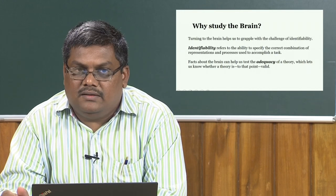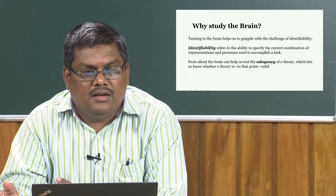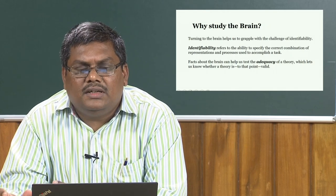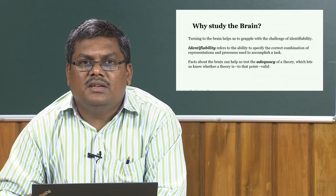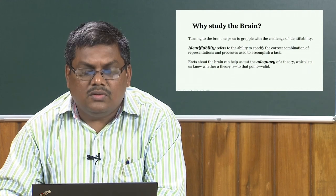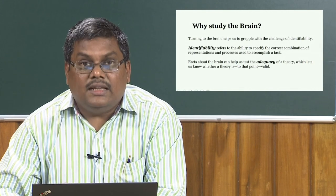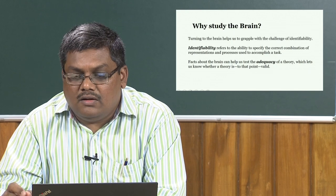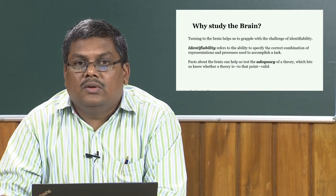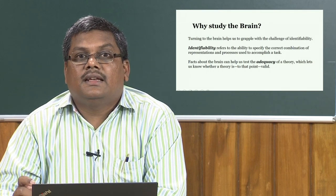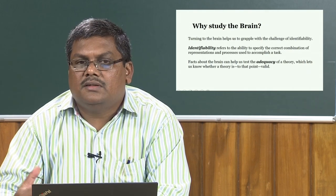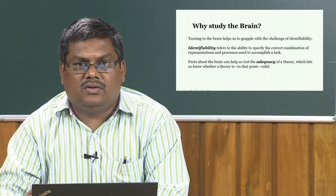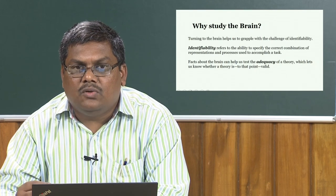Why do we study the brain? The brain is composed of different neurons and neuronal groups which have a biological structure, and at first sight it does not give us much information about mental processes. However, looking at the brain will help us identify those processes and the correct combination of processes required to complete a task. Since the brain leads to the mind, the processes of the mind will directly project to the brain, and changes in brain structure and activity can be correlated to the working of the mind.